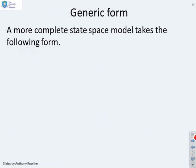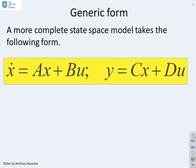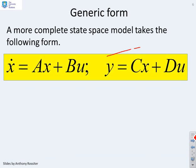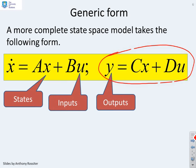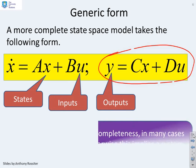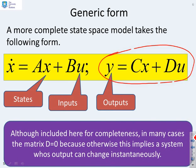A more complete state-space model then takes the following form. You'll notice I've introduced this concept of the output equation: y equals Cx plus Du. So the states are in x. The system inputs are in u. And the outputs are in the vector y. Now you'll notice here that I've included this term Du at the end for completeness, because the generic state-space model has this.